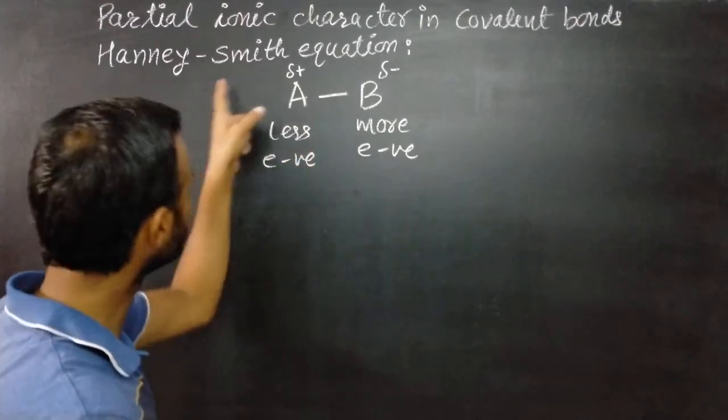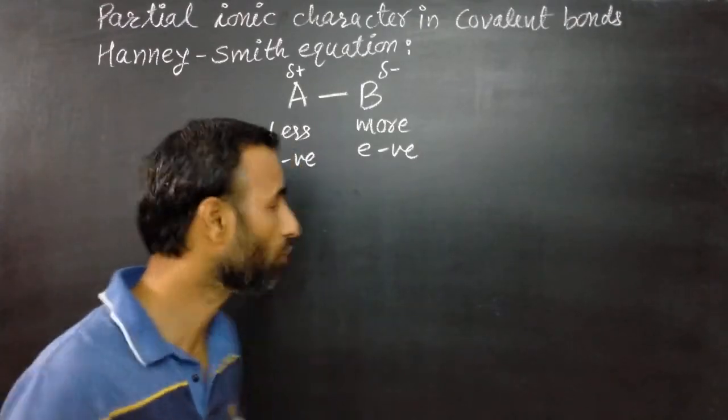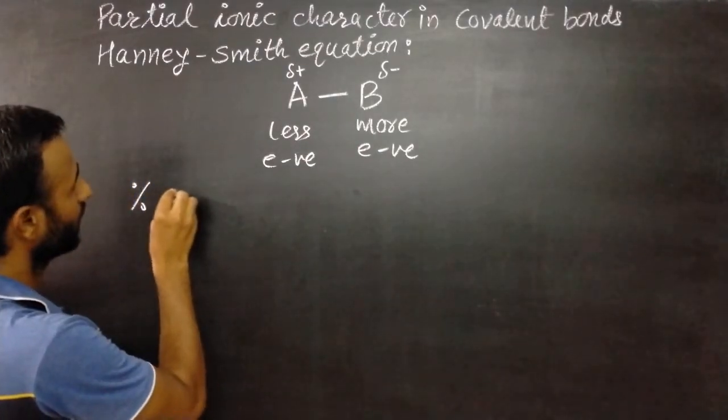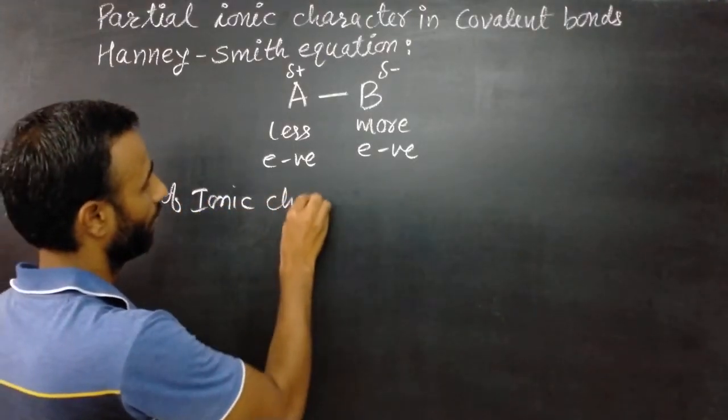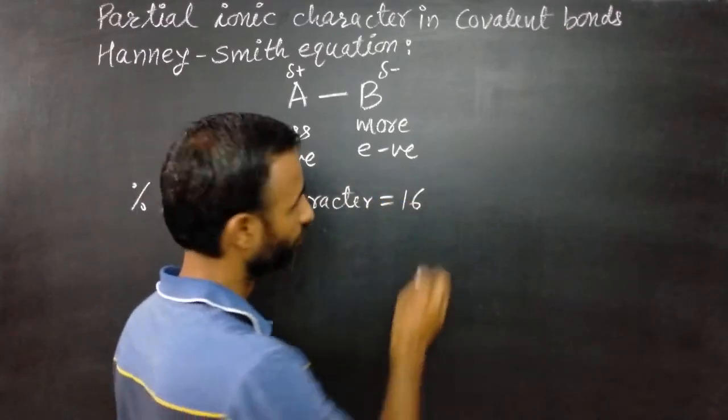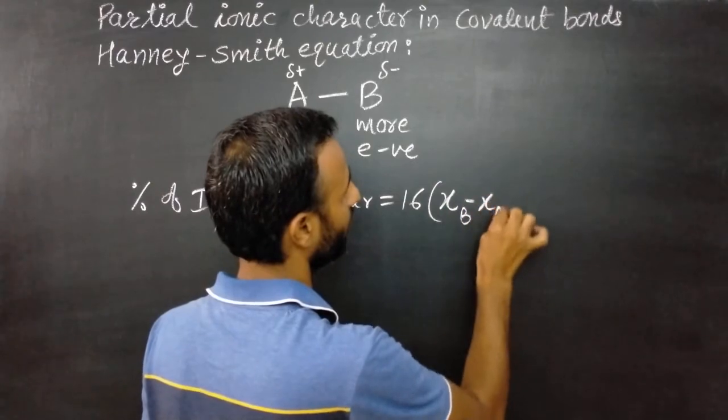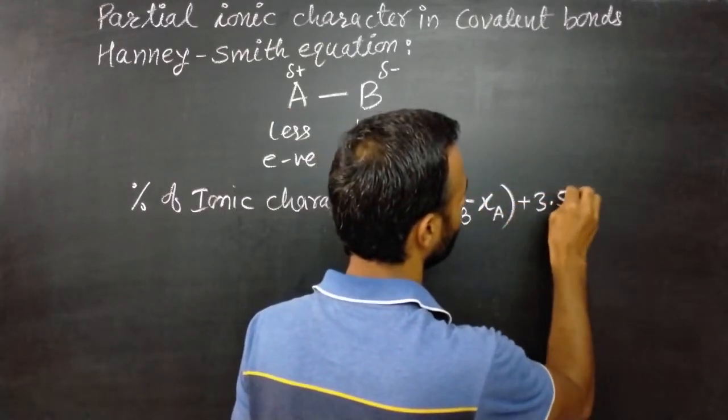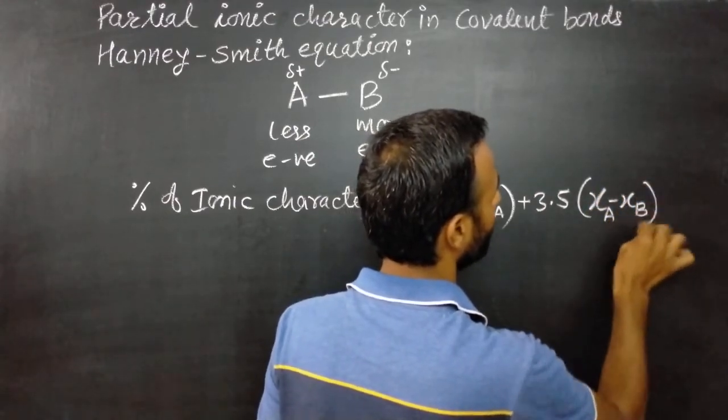Hanne and Smith, these two, calculated percentage of ionic character and gave a formula to calculate percentage of ionic character. And the formula is 16 times (χB - χA) plus 3.5 times (χB - χA) squared.